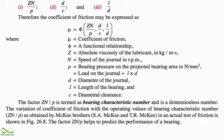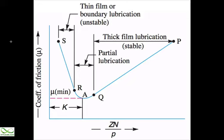The factor ZN/P is termed the bearing characteristic number, and remember it is a dimensionless number. By investigating the variation of ZN/P with respect to μ, we can understand how these factors really depend upon the design of any bearing. McKee's brothers investigated the relationship between the coefficient of friction and this dimensionless quantity ZN/P.